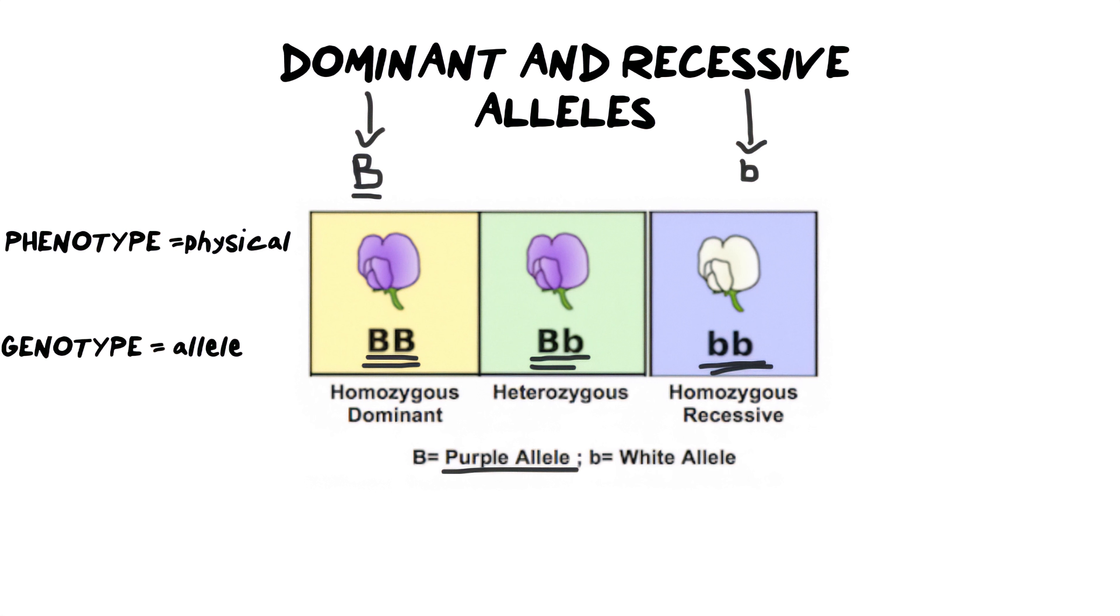Now, to summarize that, when you are writing out these characteristics, and specifically you are writing out the genotype, you would say, for example, that this organism, the first one would be homozygous dominant.